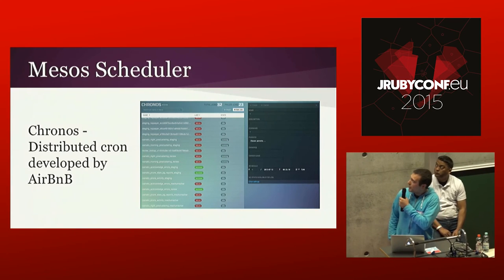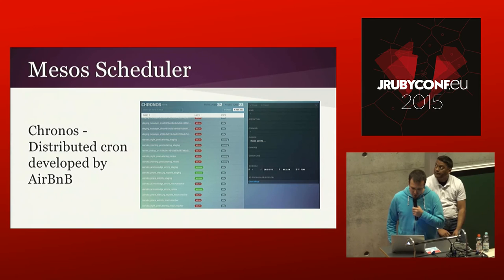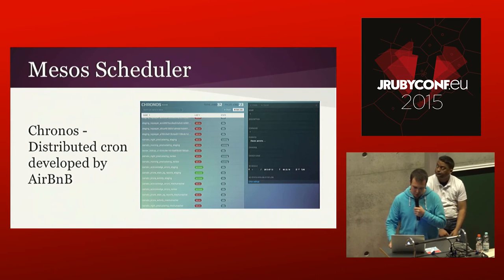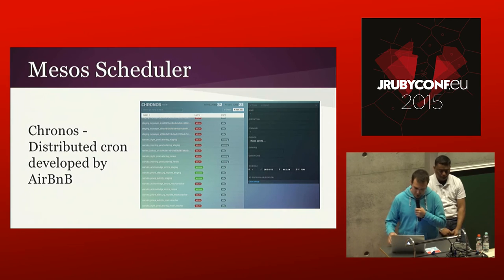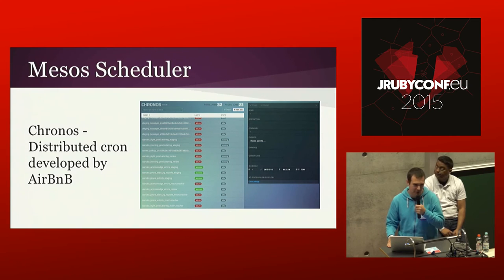An example of a scheduler is Kronos, developed by Airbnb. It gives you an API you can post to and basically run all of your recurring tasks. Interestingly, we actually decided to run all of our database migrations as a Kronos task before deploying to our execution layer, which is nice for being compliant with the 12-factor app methodology.